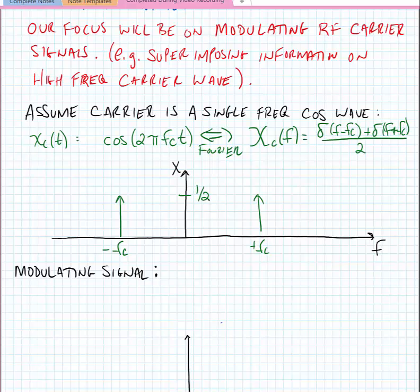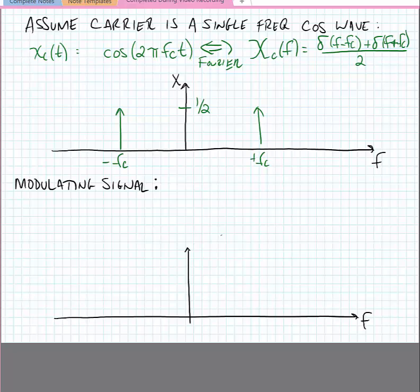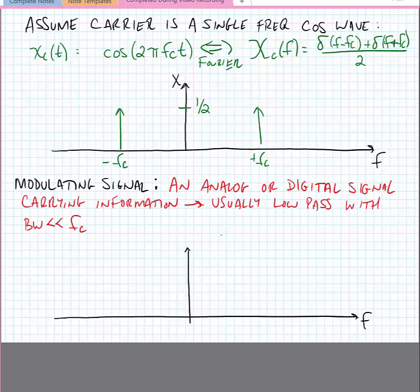Now let's examine our modulating signal. Our modulating signal is an analog or digital signal that carries information and it's usually low-pass with a signal bandwidth that's much much less than the carrier frequency. Let's imagine that our modulating signal is x of m in the frequency domain and it has some shape with a bandwidth from minus bandwidth over two to plus bandwidth over two.